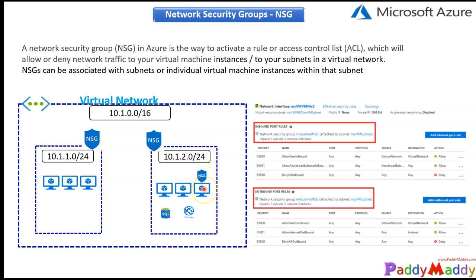When you configure an NSG at the virtual machine level, it associates with the virtual network card. So NSGs are assigned either to a network card or to a subnet. We'll do a hands-on demo in the next lecture — thank you for watching.